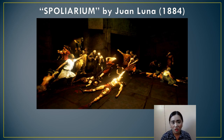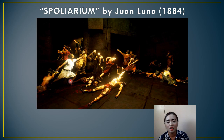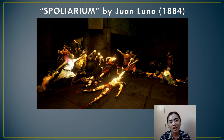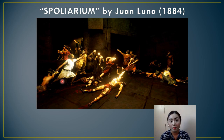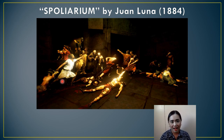The painting can be divided into three parts. Here on the left side, you would see Roman politicians laughing and stripping the dead gladiators of their worldly possessions. These Roman politicians represent the Spanish government officials and the priors, while the dead gladiators represent us, Filipinos. We are being stripped by the Spaniards of our worldly possessions, specifically our lands. If you remember the encomienda system, that is one way on how they are stripping us of our lands.